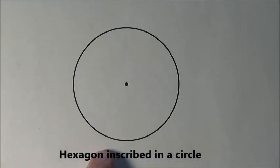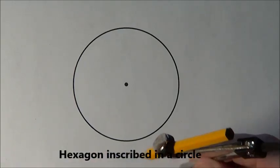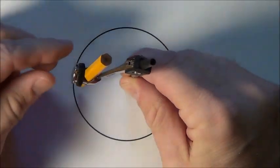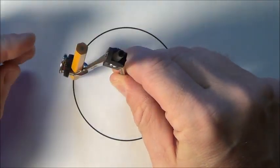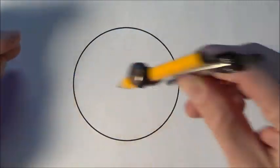Here we're going to make a hexagon inscribed inside a circle. The first step is to create a circle. Now I've already done that. So there's our circle.